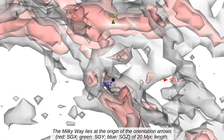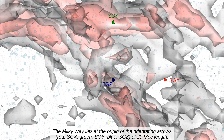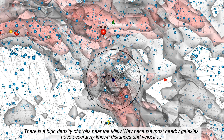The Milky Way lies at the origin of the orientation arrows: red SGX, green SGY, blue SGZ, of 20 megaparsec length. There is a high density of orbits near the Milky Way because most nearby galaxies have accurately known distances and velocities.